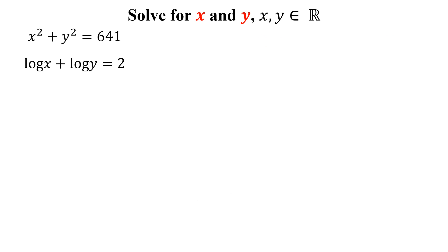Let's begin to solve the question. We have these two equations: x squared plus y squared equals 641, let this be equation 1, and the second equation is log x plus log y equals 2, let this be equation 2, where the log is standard log with base 10. What are the values of x and y where x, y belong to the set of real numbers?